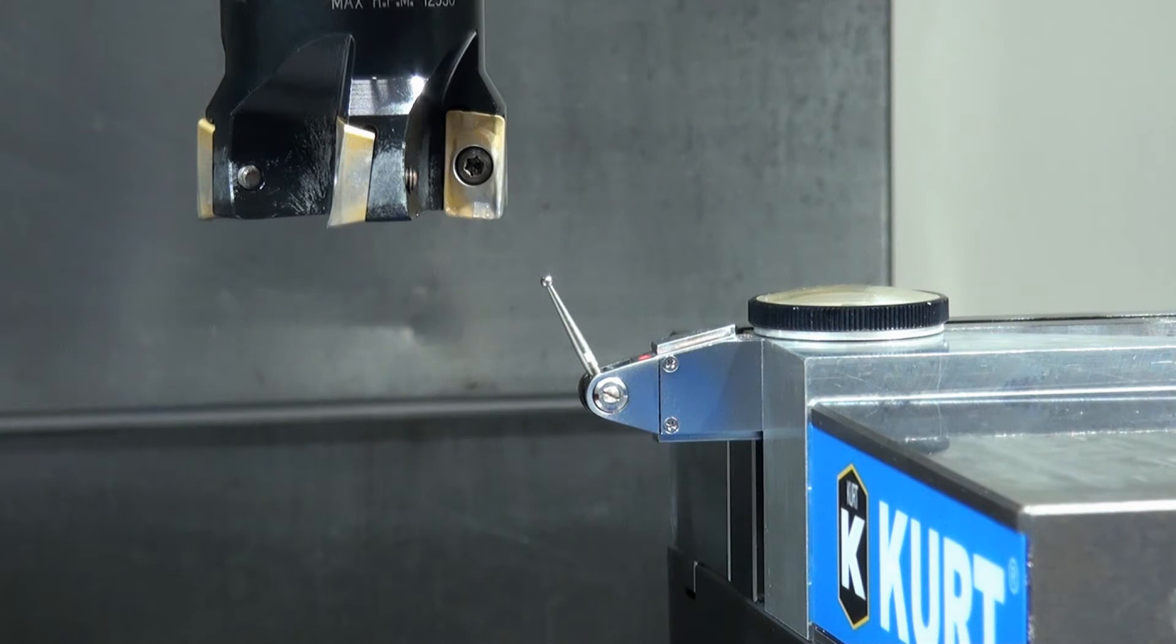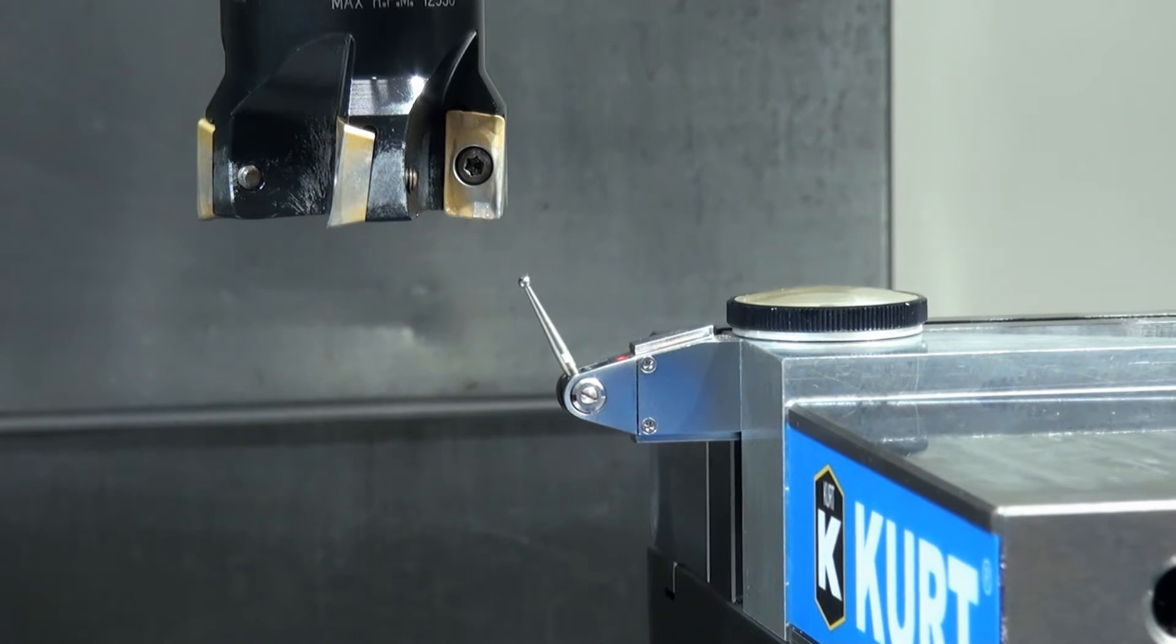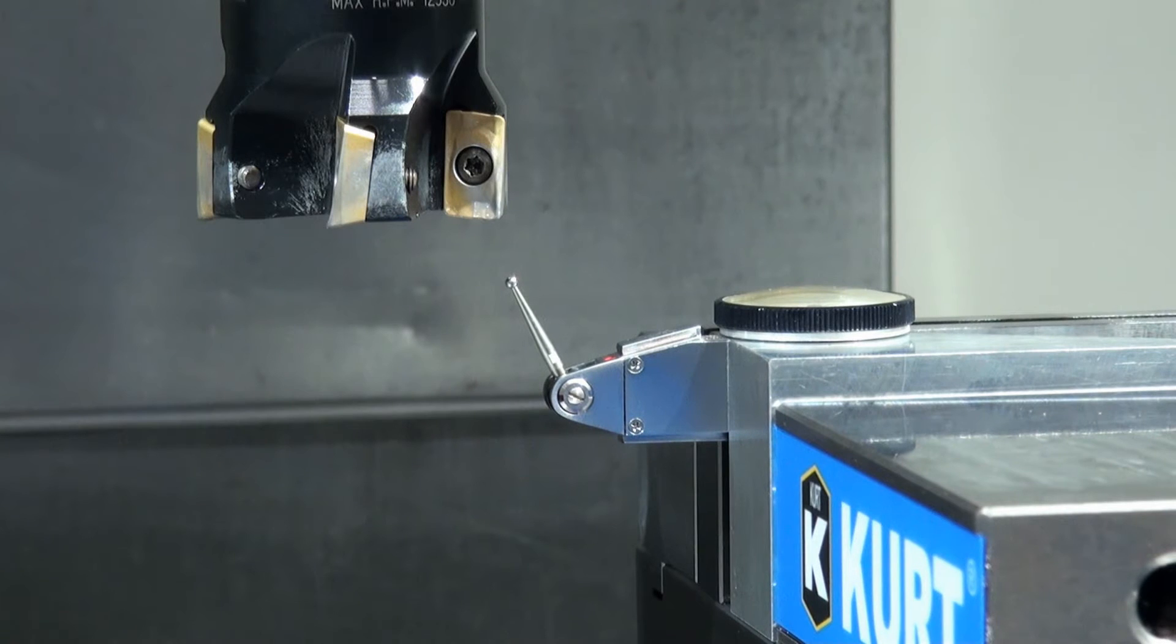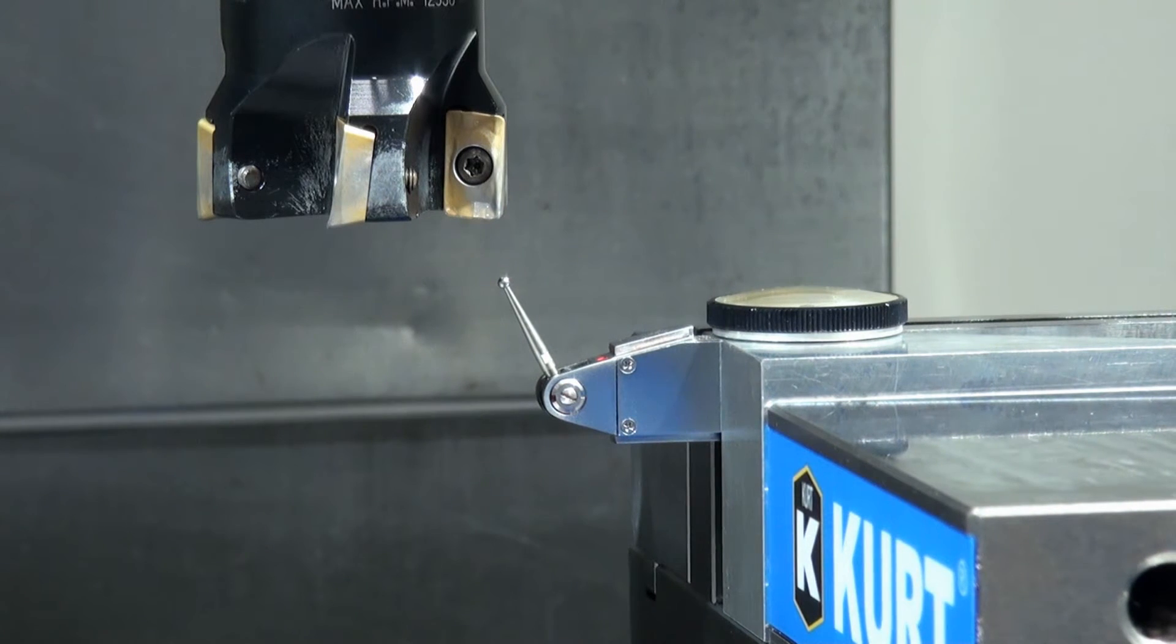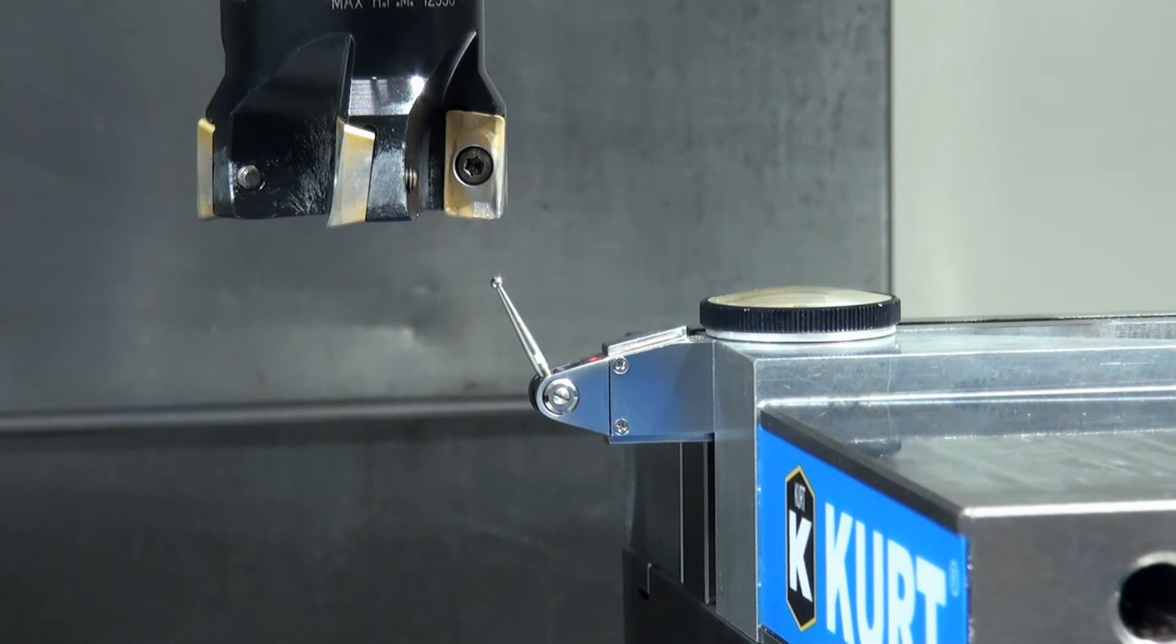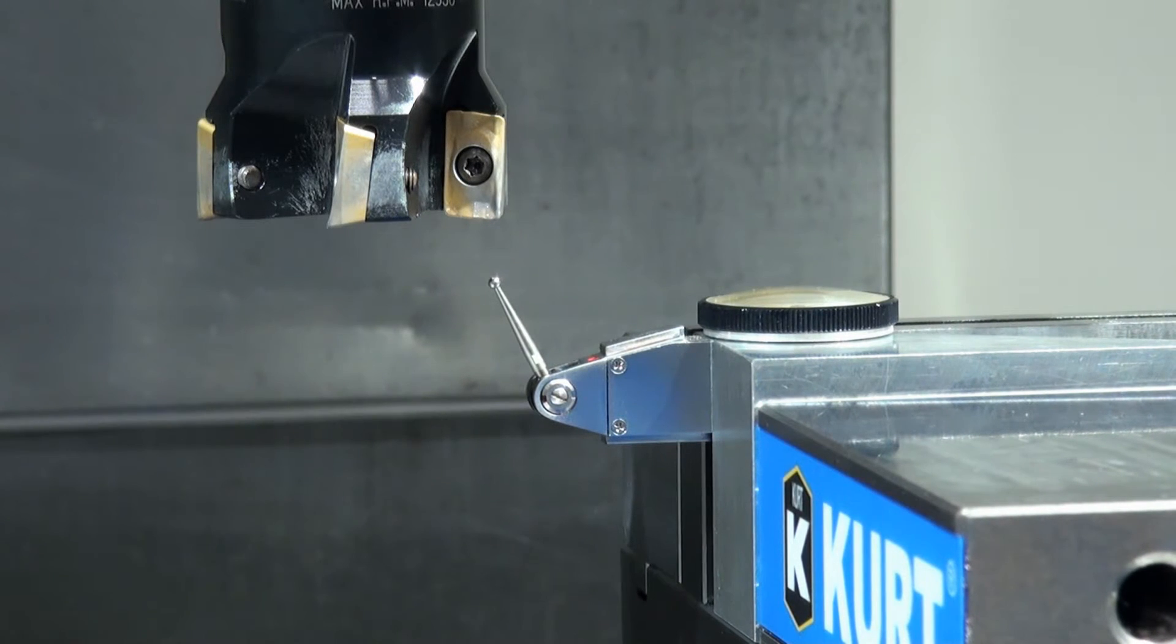Okay and now I'm going to come back to x zero first. So there's x zero. Now here's here's the trick. That OD of that tool holder I know the diameter on. It's just a round bar. It's easy to mic it up.